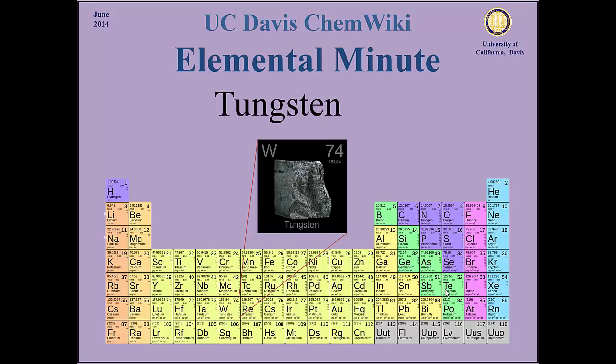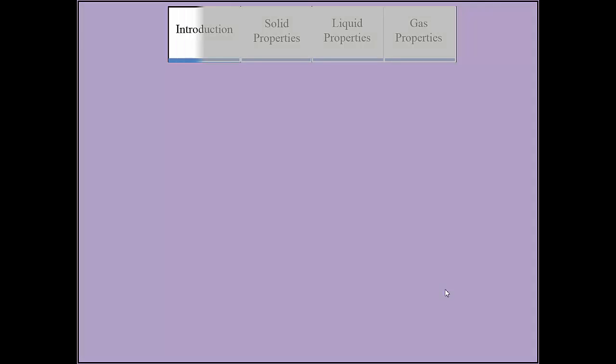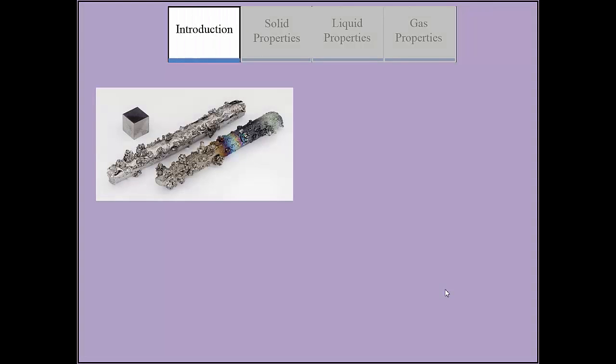Tungsten, also known as wolfram, is a hard, rare transition metal found naturally on Earth in wolframite ores. Grayish white in appearance, tungsten has many oxidation states, the most common being plus six.